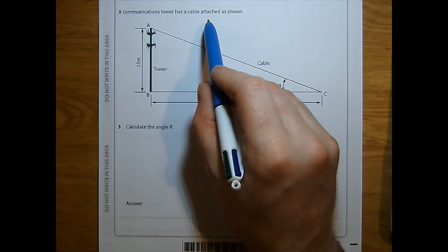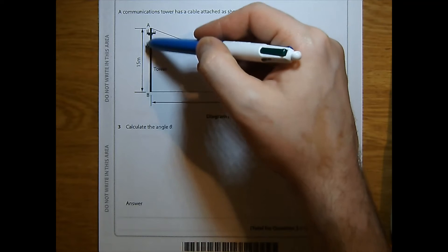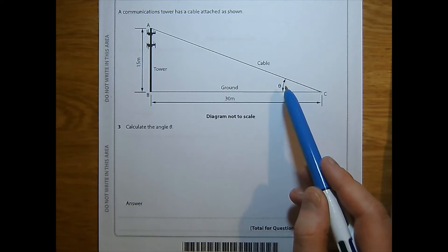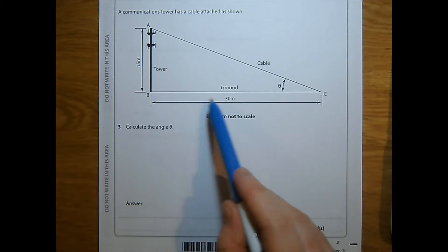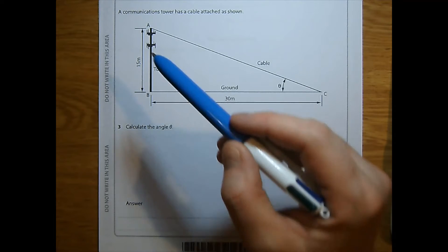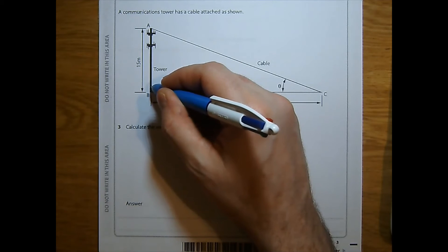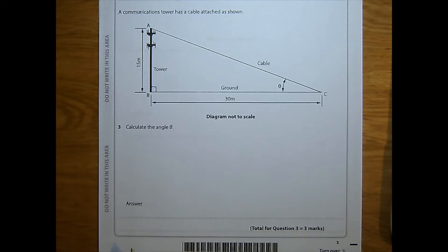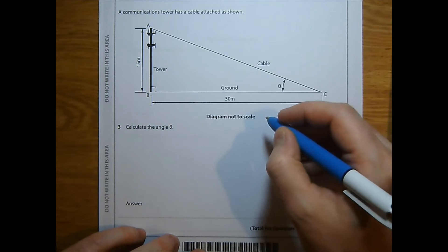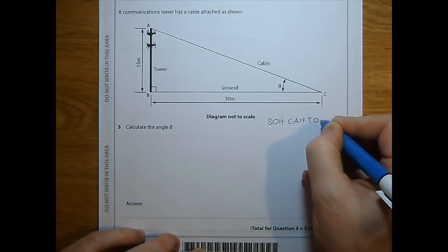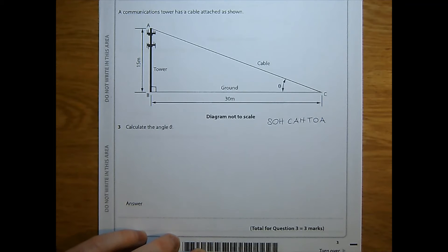Question 3. A communication tower has a cable attached as shown. There's the cable, there's the tower, and this is the ground. The angle here is unknown. The ground is 30 meters, so meters are our units. The tower is 15 meters. Unless we're in Pisa, the tower won't be leaning, so it will be at 90 degrees. We can annotate our diagram to remind us of that. Consequently, I know I'm dealing with SOHCAHTOA here.